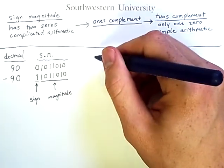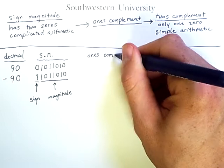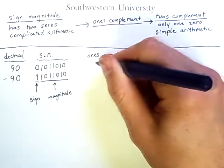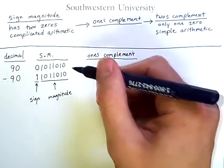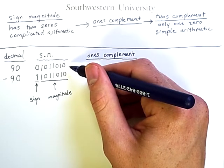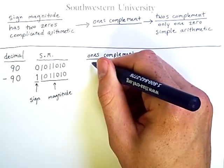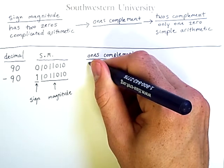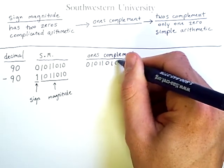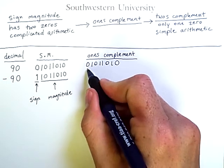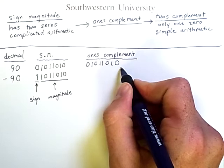And this portion is the magnitude of 90. Now, to get a one's complement representation, you'll see that for the positive value, we actually don't do anything. In one's complement, we represent positive 90 with the same binary string. 0, 1, 0, 1, 1, 0, 1, 0. Once again, this 0 represents a positive sign. These 7 bits represent the magnitude 90.